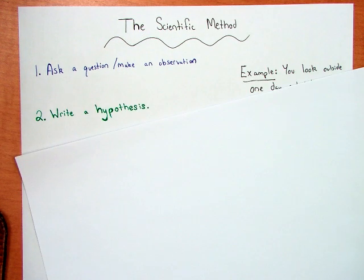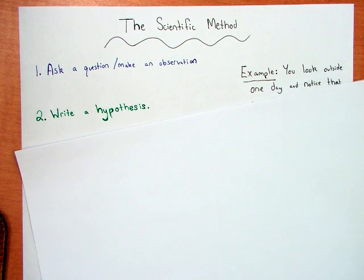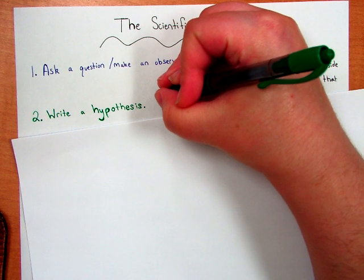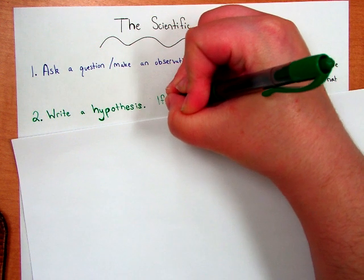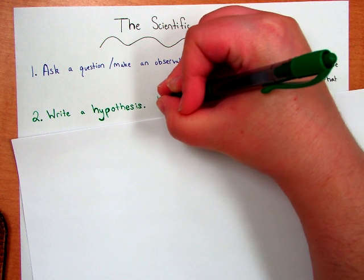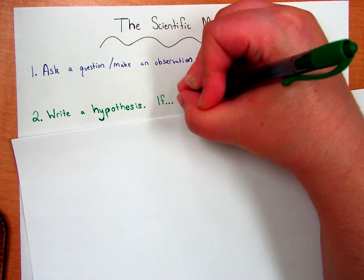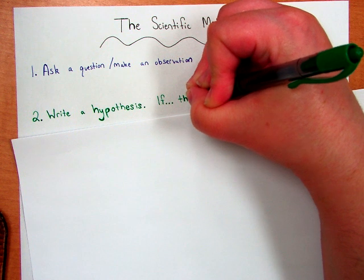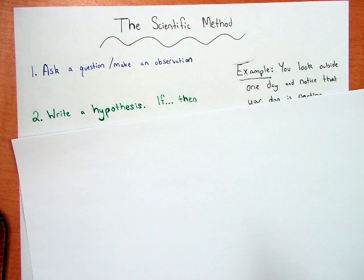After that we write a hypothesis. A hypothesis usually is in the form of an if-then statement: if this happens, then this will also happen. So we will be using the if-then statements for our hypotheses.